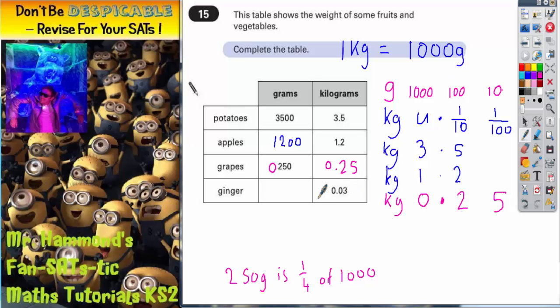For the final one, we've been told that ginger is 0.03 kilograms. So we've got 0.03 like that. Now if you check it against the grams, we've got no thousands, no hundreds and three tens. Now three tens, a three in the tens column is 30. Three tens is 30. So this must be 30 grams.